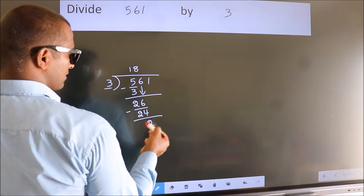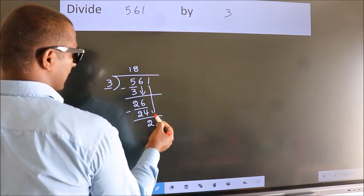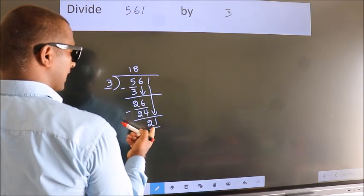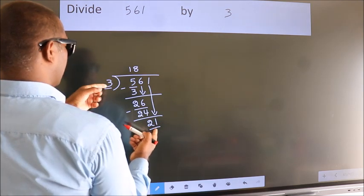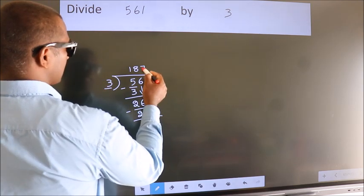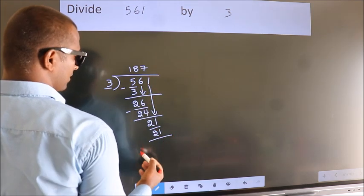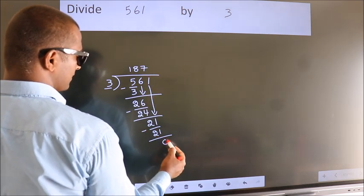After this, bring down the beside number. So, 1 down. So, 21. When do we get 21 in the 3 table? 3 7s, 21. Now we subtract. We get 0.